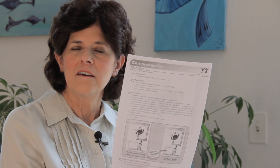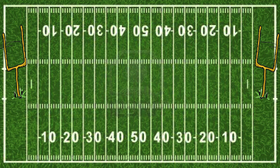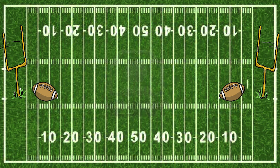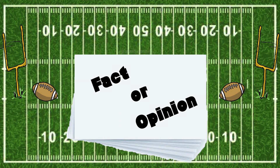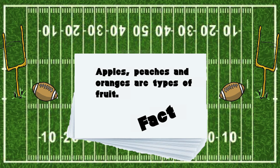The lesson I'm going to show you today is a way that a second or third grade teacher could share fact or opinion football in the classroom. In this activity, students will be identifying facts and opinions by playing a football game. First, they will place two goal posts at the center and place fact or opinion cards face down in a stack. For example: apples, peaches, and oranges are types of fruit.